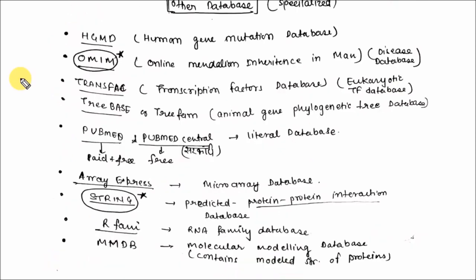Some other important or specialized databases include HGMD (Human Gene Mutation Database), which is a mutation database, and OMIM (Online Mendelian Inheritance in Man), which is a disease database.